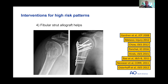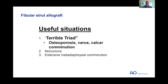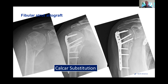Fibular strut allograft: the most useful situations are the terrible triad of osteoporosis, varus, and calcar comminution; surgical neck non-unions; and when comminution extends distally into the metadiaphyseal region. Here's an example of a younger patient with a varus calcar fragment — the perfect situation where the calcar is actually reconstituted by a fibular allograft, ending up with a very stable construct.